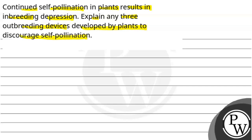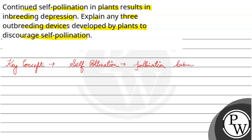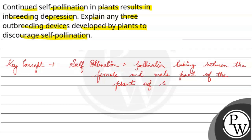Self-pollination means what? Let's look at it. The concept is self-pollination. It means pollination taking place between the female and male parts of the same plant. When the same plant has both female and male parts, it is self-pollination. This means the product produced doesn't have any genetic variation — it will be of the same species. When male and female are of the same species, there will be no variations.